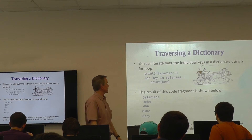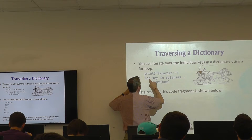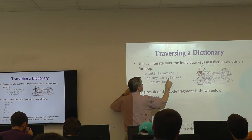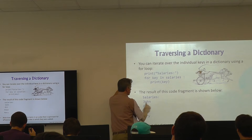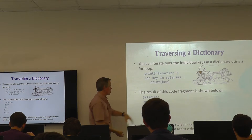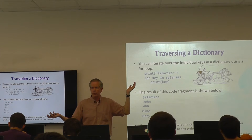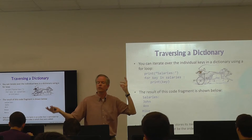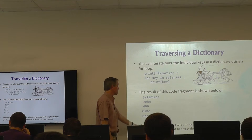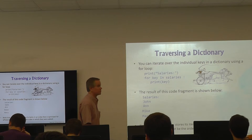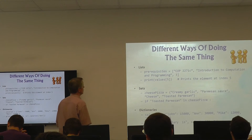If you want to list everything out in a dictionary: `print(salaries)`, then `for key in salaries: print(key)`. For each key in the dictionary, that prints John, Ann, Mike, Mary — but notice there's no particular order. You can't make any statements about the order they'll come out. Dictionaries have no order, but they do have content. Order is optimized for efficiency, not for what you want. You can sort it, but you can't say anything about how it's stored naturally.